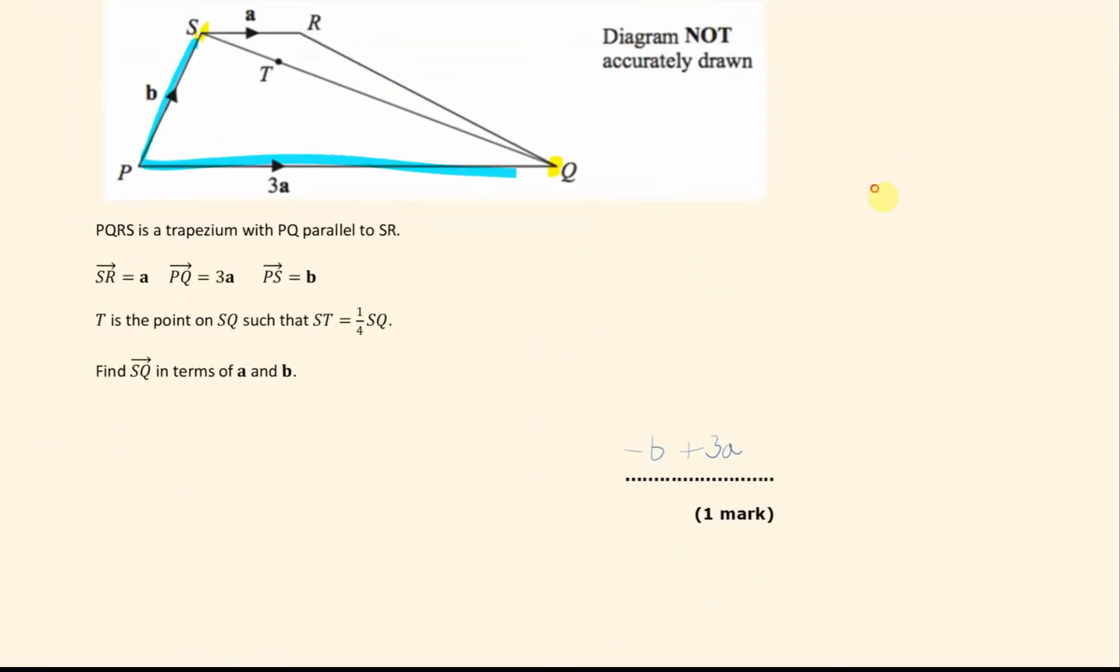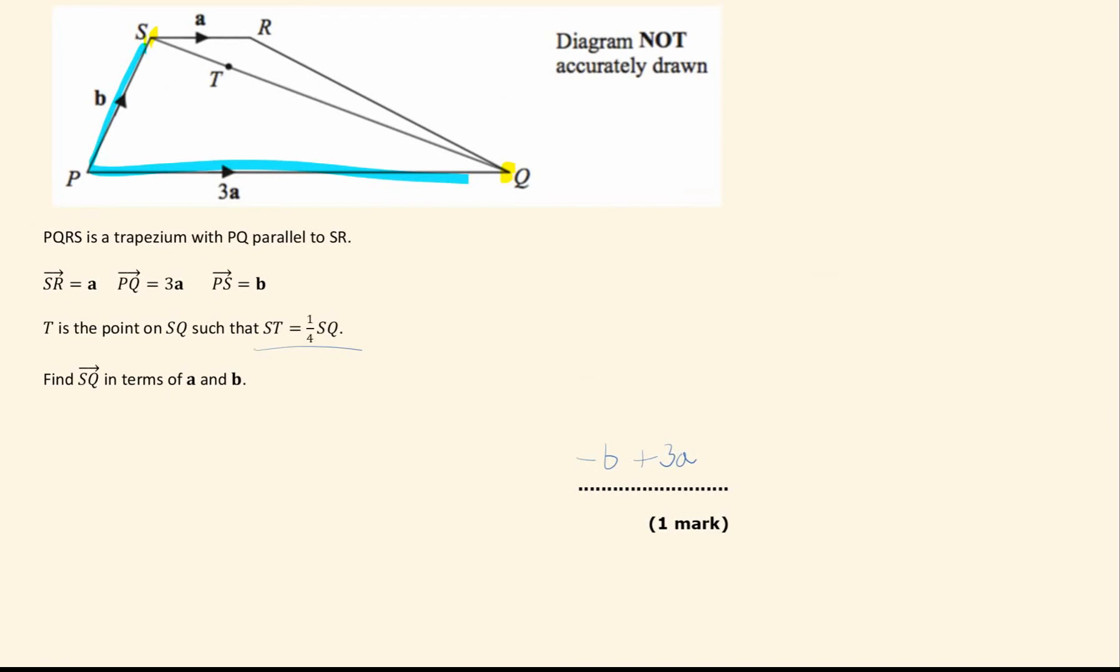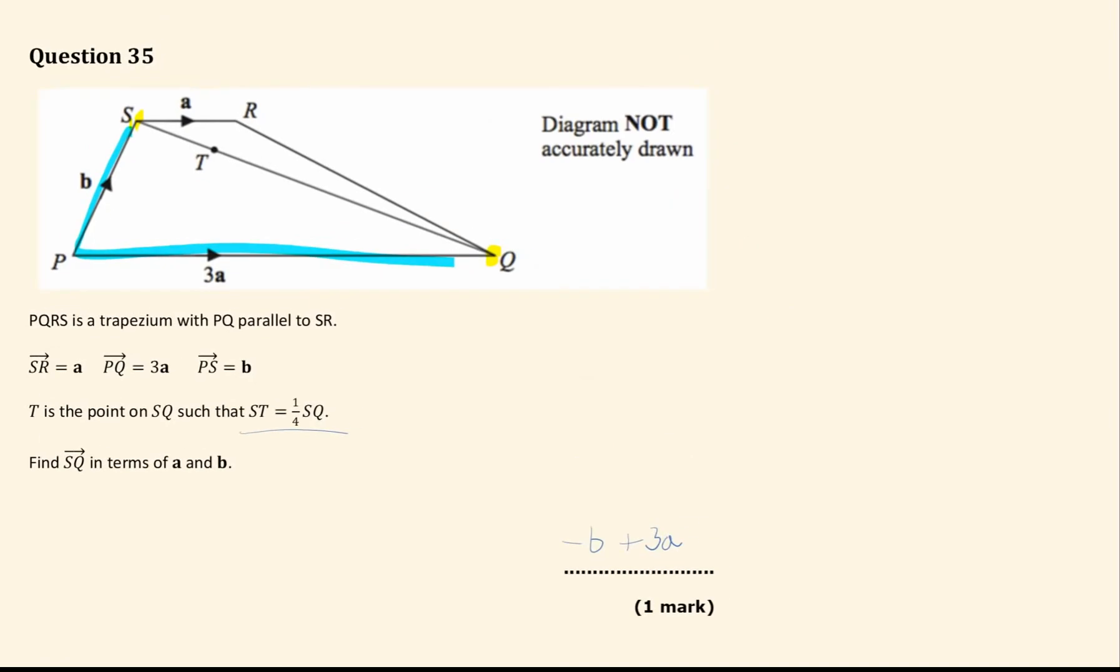OK, the part B question. We are told T is on this point here. And part B would be to work out S to T. And we can see that S to T, because S to T is one quarter of S to Q, we can write that straight down. And we know S to Q is minus b plus 3a.